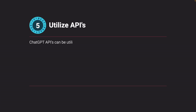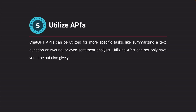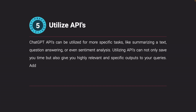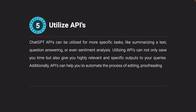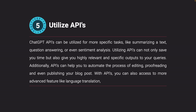ChatGPT APIs can be utilized for more specific tasks, like summarizing a text, question answering, or even sentiment analysis. Utilizing APIs can not only save you time but also give you highly relevant and specific outputs to your queries. Additionally, APIs can help you automate the process of editing, proofreading, and even publishing your blog post. With APIs, you can also access more advanced features like language translation, text completion, and much more.